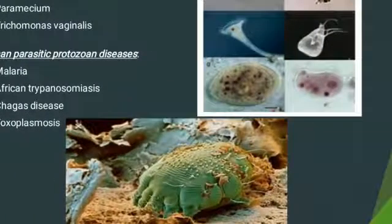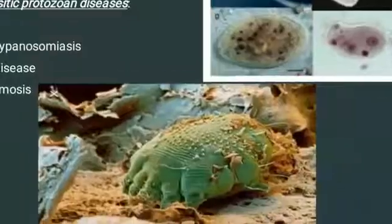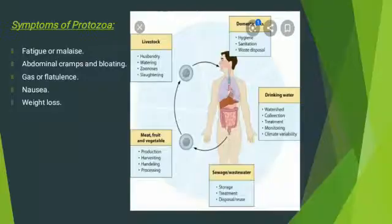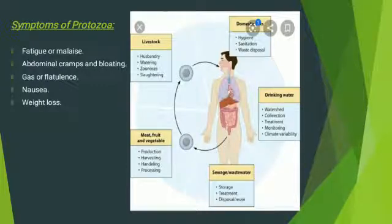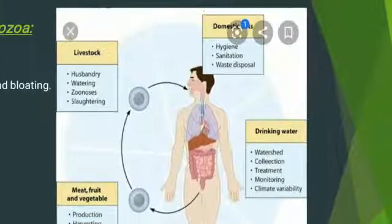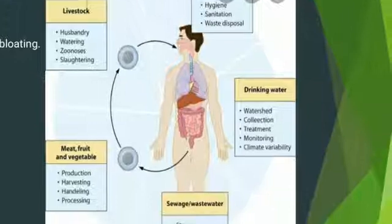Human parasitic protozoan diseases include malaria, African sleeping sickness, and Chagas disease. These are some parasites which cause disease in humans. Some symptoms of protozoan disease include fatigue, abnormal cramps, gas, nausea, and weight loss. The parasite Giardia lamblia causes disease in humans by contaminating drinking water.